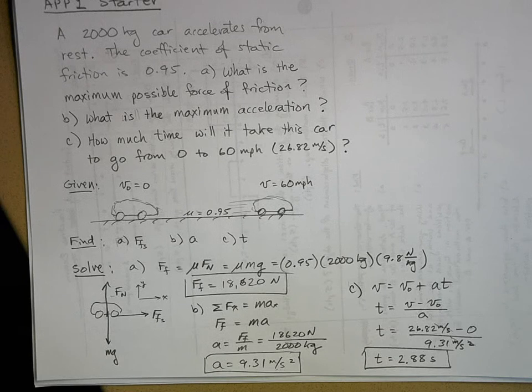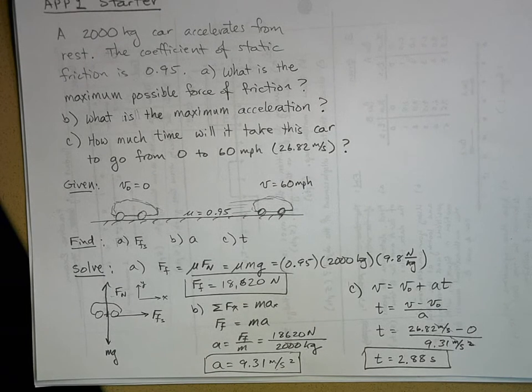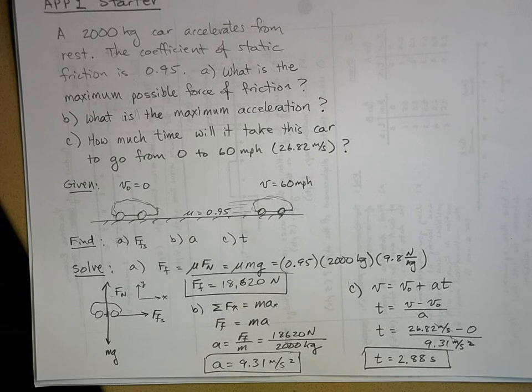Now, Tesla just came out with the Roadster 2, right? And supposedly, it has a 0 to 60 in 1.9 seconds.